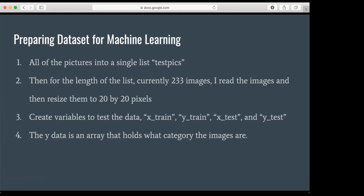So I put all the pictures into a single list called test picks. Then for the length of the list which is 233 images, I read the images and then I resized them to 20 by 20 pixels. And then I created variables to test the data. X-train, Y-train, X-test, and Y-test.